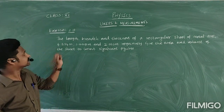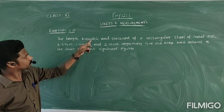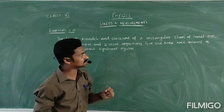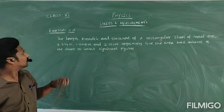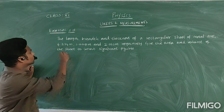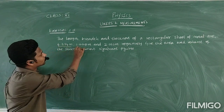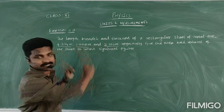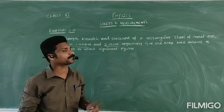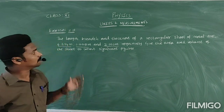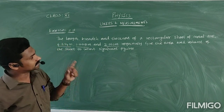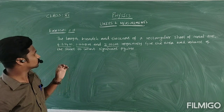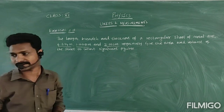See the question. The length, breadth and thickness of a rectangular sheet of metal are 4.234 meter, 1.005 meter and 2.01 centimeter respectively. Give the area and volume of the sheet to correct significant figures.